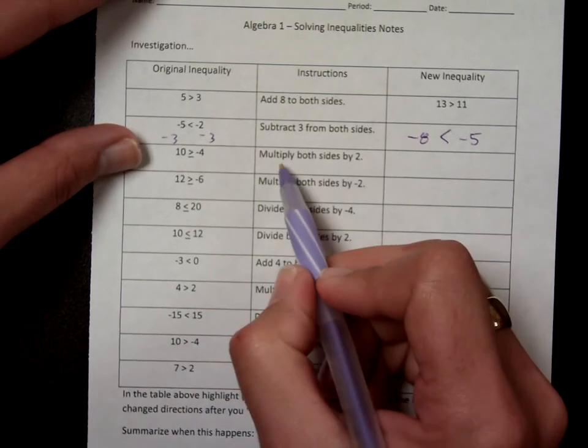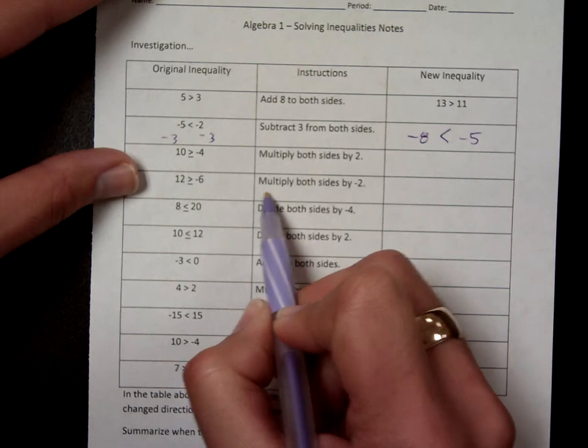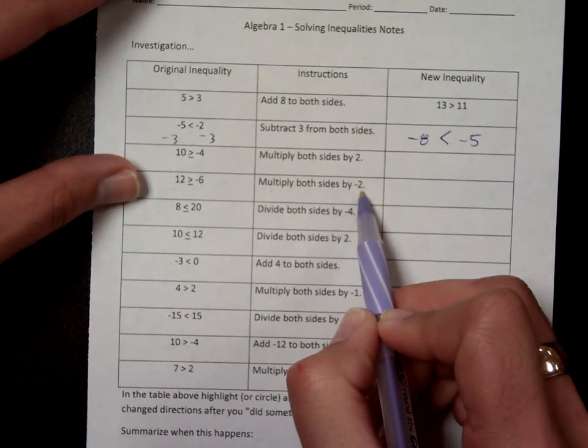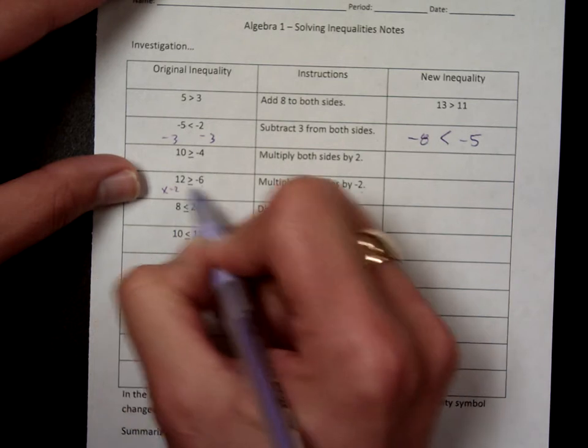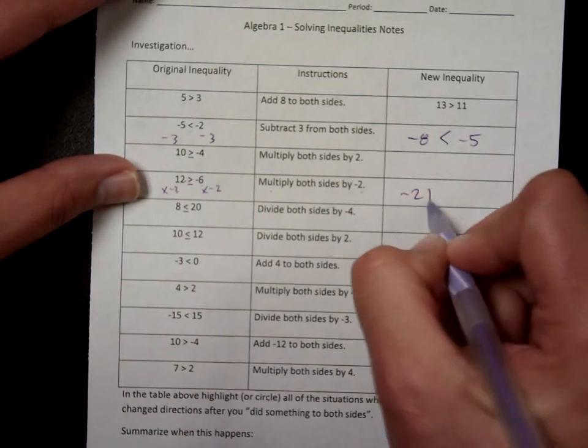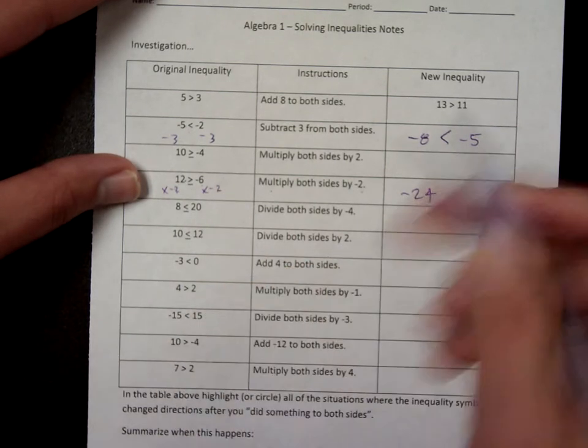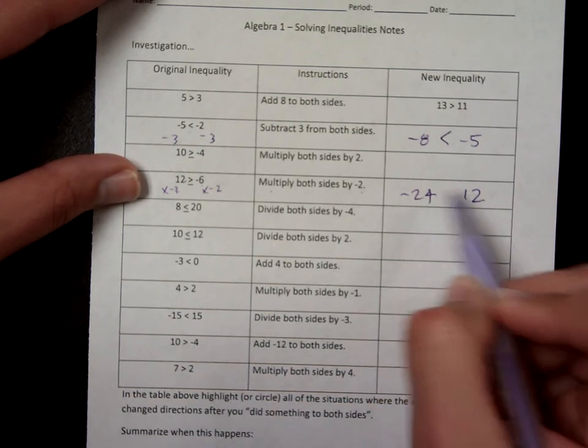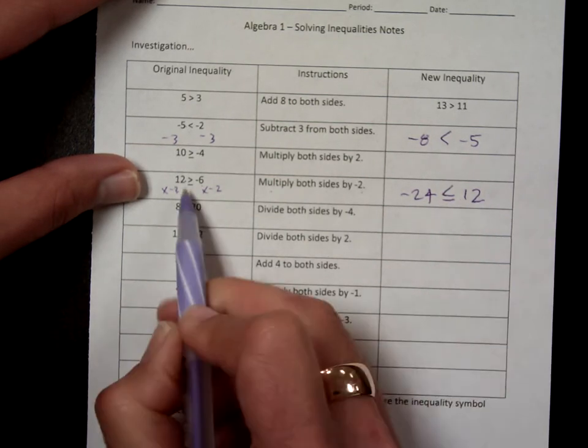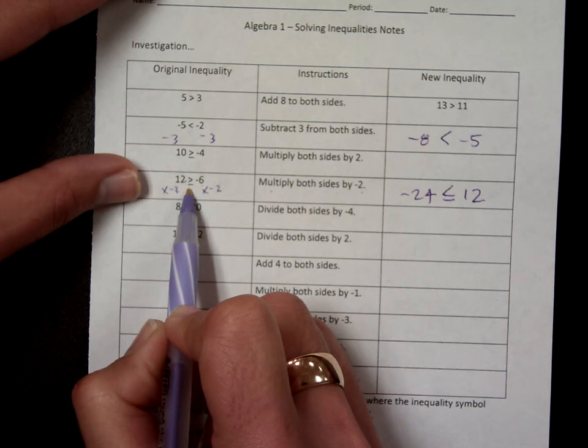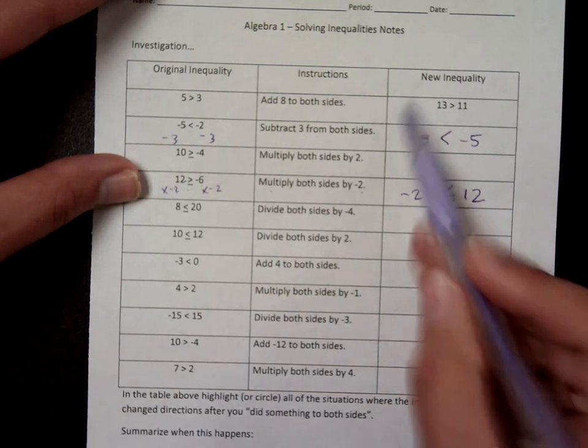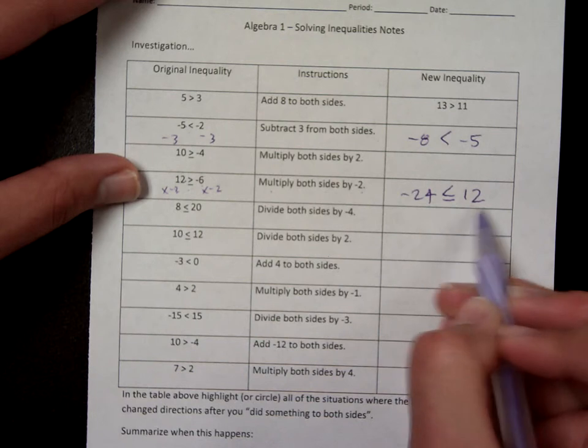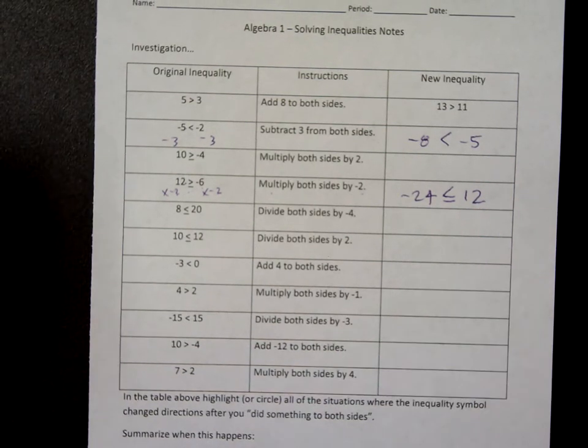Try another one. Look down here at the fourth one. It says 12 is greater than or equal to negative 6. It says multiply both sides by negative 2. Well, 12 times negative 2 is negative 24, and negative 6 times negative 2 is positive 12. So now negative 24 is less than 12. So, I have to put a less than or equal to, because this was a greater than or equal to before. Notice the inequality changed. I still have to have a true statement over here. So, sometimes I'm going to have to switch the inequality. You have to fill in the inequality in the way that it goes. So go ahead and finish up the table.